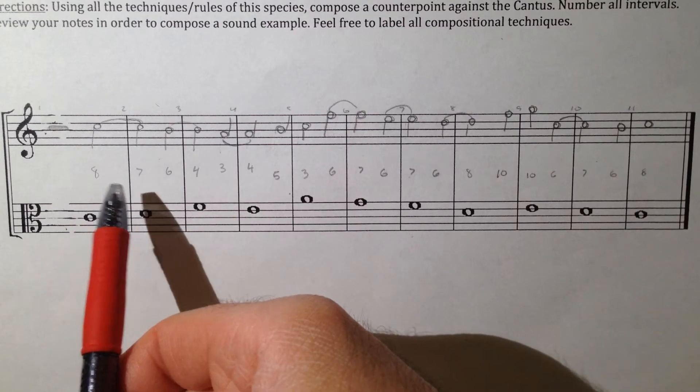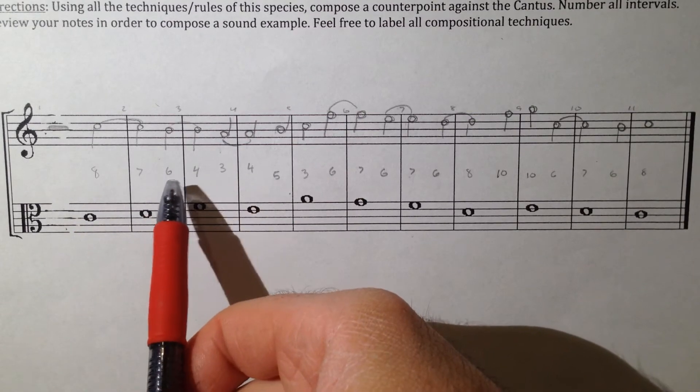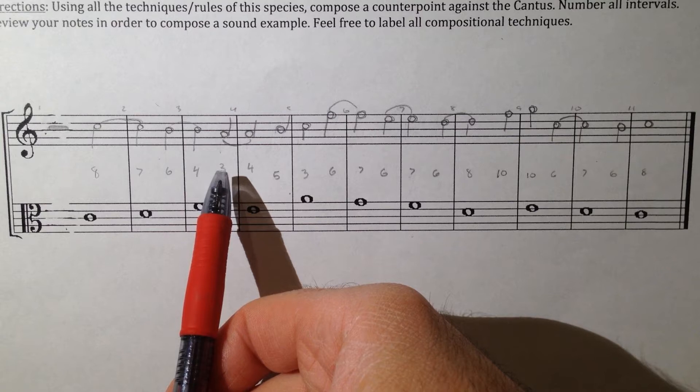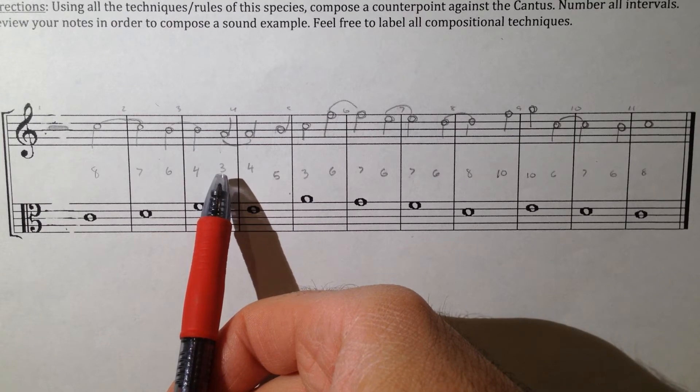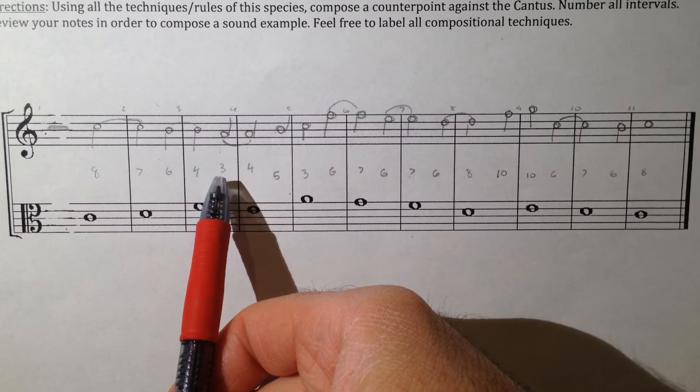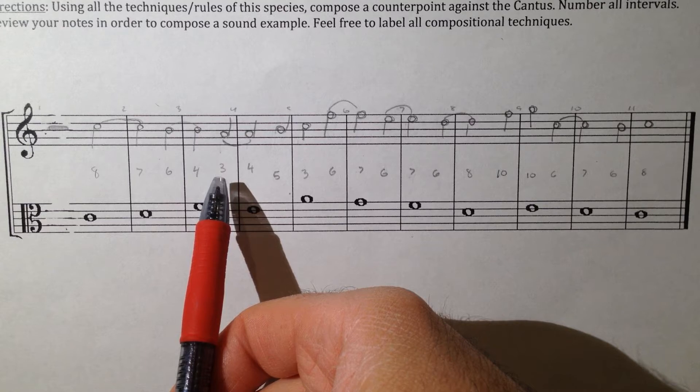So you're going to want to create these chains of suspensions, and again, the upbeat, or the second beat in the measure, has to be a consonant interval.